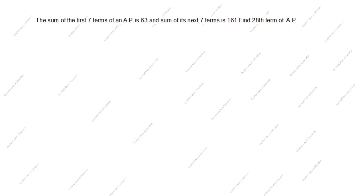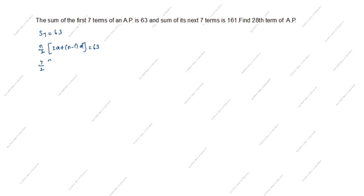What is given? Sum of first seven terms — this is S7. S7 is equal to 63. The formula for sum of first n terms is: n by 2, open bracket, 2a plus (n minus 1) into d, equals 63. Here n is 7, and a and d are unknown.